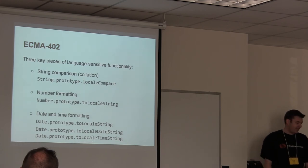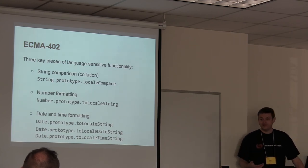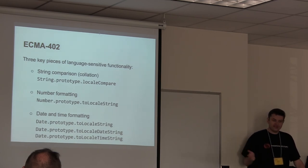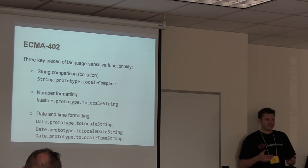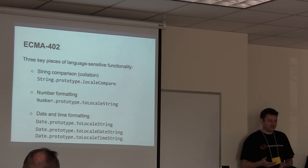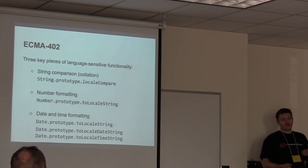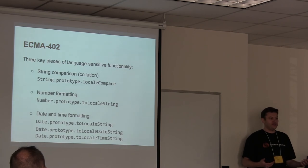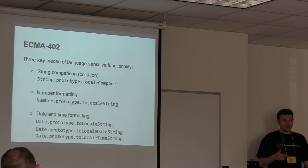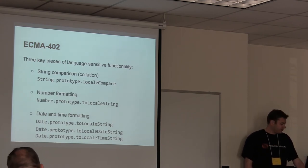ECMA-402 has basically three key pieces: string comparison, number formatting, and date and time formatting. String comparison and collation is a harder problem — once you're in different languages, sort order becomes complex. Where does a U-umlaut sort relative to U? What about an N-tilde character? Those rules can't really be baked into an add-on JavaScript library because that's a lot of data and processing. That's one of the biggest advantages the built-in API has over open-source add-on libraries.